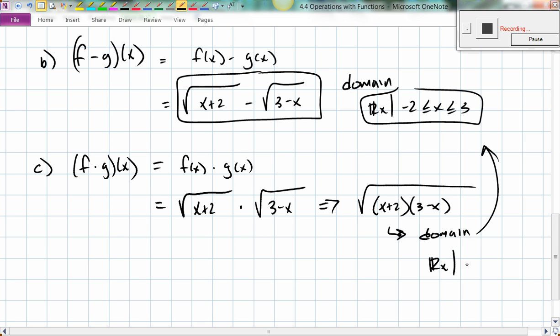I could use FOIL and multiply that out, but I could just leave it like that. And the domain for this thing is exactly the same as it was before. All real numbers x, such that negative 2 less than or equal to x less than or equal to 3. So nothing has changed so far for that.